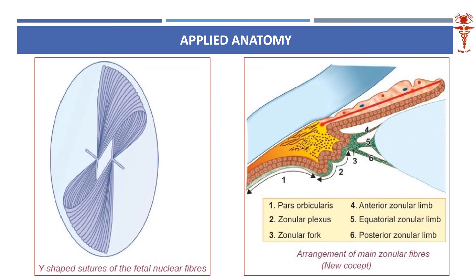Another interesting feature is the support of the lens. You can see the zonules — the anterior zonular limb, the middle zonular limb, and the posterior zonular limb — all attached to the ciliary body. There is also a zonular plexus and a zonular fork-like arrangement. This attachment is very necessary for the lens to stay in its proper place.